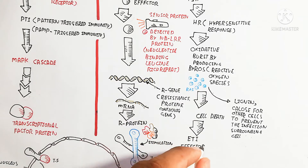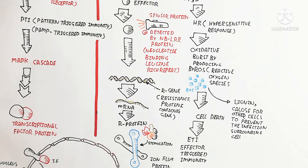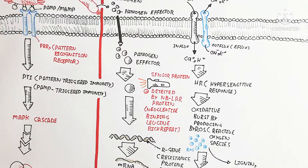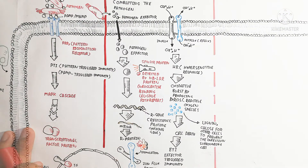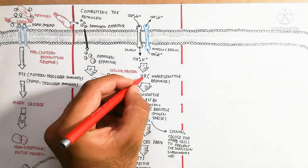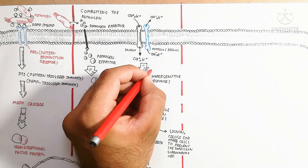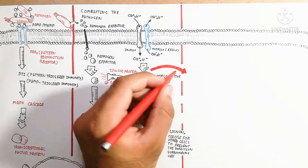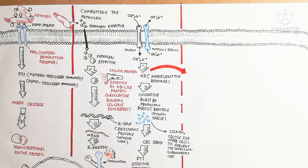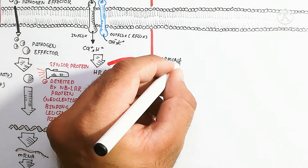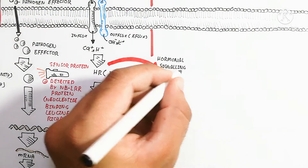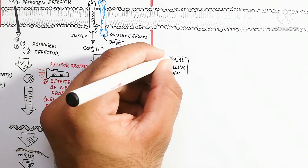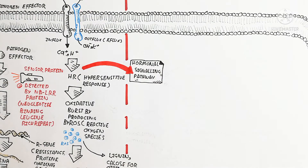In ETI, the reactive oxygen species also trigger lignification and callus formation in surrounding cells to prevent the spread of infection. The hypersensitive response is also caused by a hormonal signaling pathway, which stimulates defense responses.